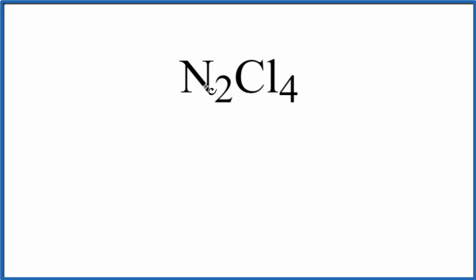So first, let's count the valence electrons. Nitrogen is in group 15, sometimes called 5A, that has 5 valence electrons.